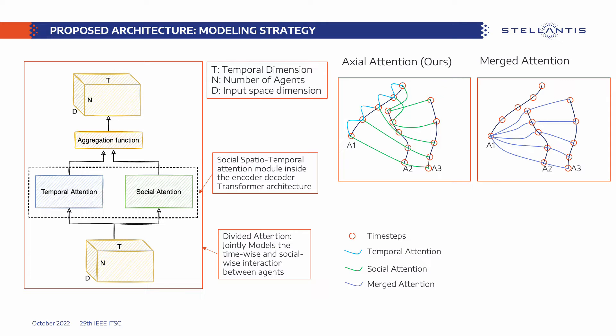Comparing this solution to the AgentFormer merged attention, the merged attention constitutes a fully-connected graph. The complexity of our module is less than the merged attention module in both inference time and memory. The decrease in model complexity in our architecture is the result of the added inductive bias, which restricts the attention field. The question of whether this inductive bias is also beneficial for prediction accuracy will be answered later.